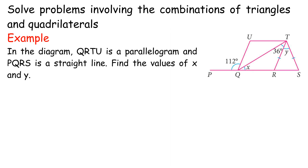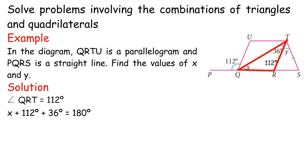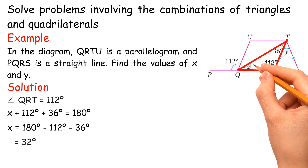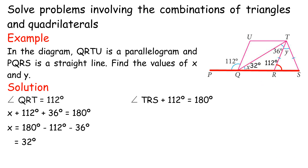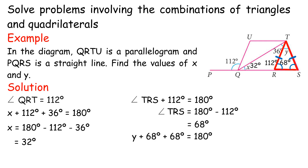Solve problems involving combinations of triangles and quadrilaterals. Example: In the diagram, QRTU is a parallelogram and PQRS is a straight line. Find the values of X and Y. Solution: Angle QRT = 112°. X + 112° + 36° = 180°, so X = 32°. Y + 68° + 68° = 180°, so Y = 44°.